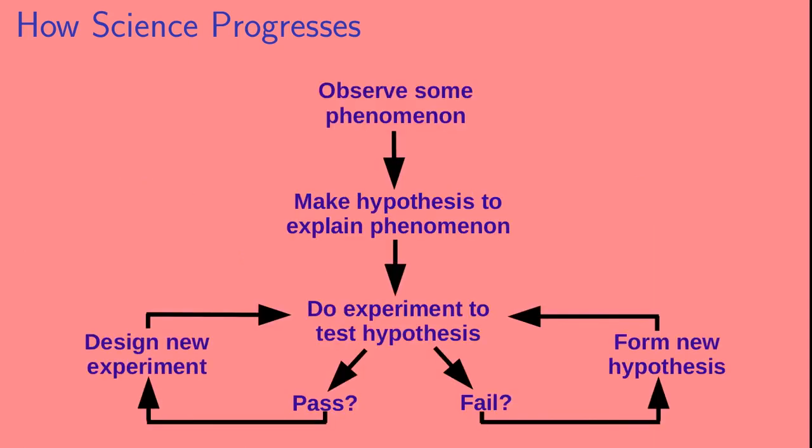In science we observe some natural phenomenon, then we make a hypothesis to explain that phenomenon, then we do an experiment to test that hypothesis. The hypothesis might pass or fail that experimental test. If it fails, we have to form a new hypothesis and then with that new hypothesis we do an experimental test.